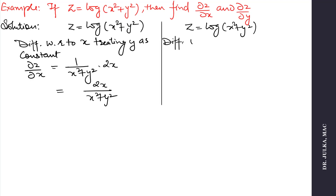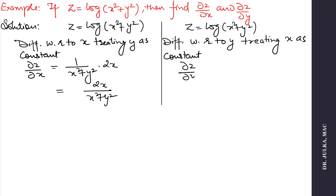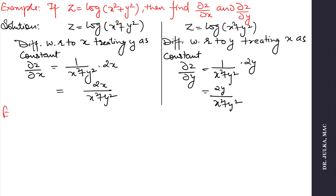Now differentiate with respect to y, treating x as constant, and we will get ∂z/∂y equals 1 upon (x² + y²) multiplied by the derivative of y², which is 2y, and the derivative of x² is 0. The answer is 2y divided by (x² + y²).